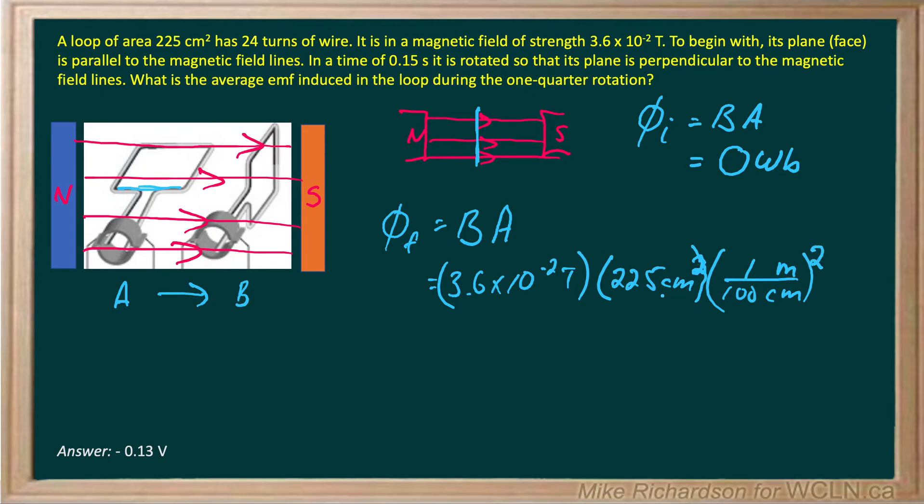So 225 centimeters squared is not 2.25 meters squared. You have to divide it by 100 squared. So when you do all that, you get your final flux to be equal to 8.1 times 10 to the negative 4 Webers.